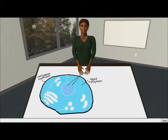Since it looks like a pool, you may not be surprised to know that the cytoplasm is mostly made up of water. This is why we call it a liquid cytoplasm.